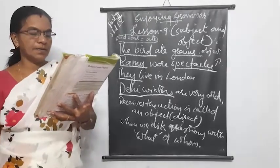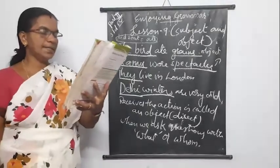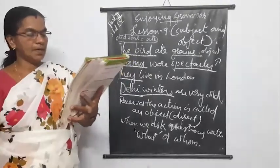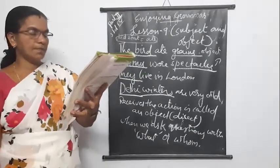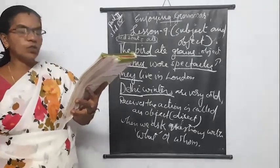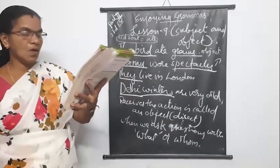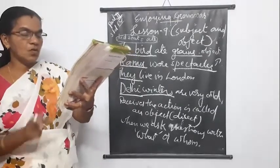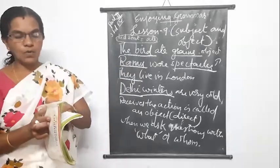Next exercise: tick the sentence that has an object. Take this cat — it has an object. The bird flew away — it has no object. I came yesterday — it also has no object. The man showed the way — what did the man show? The way. So the way is the object. They ate all the apples — apples is the object. My father baked a cake — cake is the object, so it has an object.